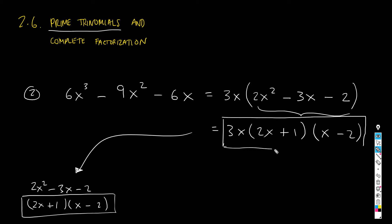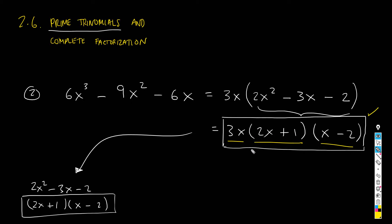How do I know I'm finished? Look at all your factors — 3x, (2x plus 1), and (x minus 2) — and realize that none of them can be further factorized. You inspect them and confirm no further factorization is possible. So this is a complete factorization.